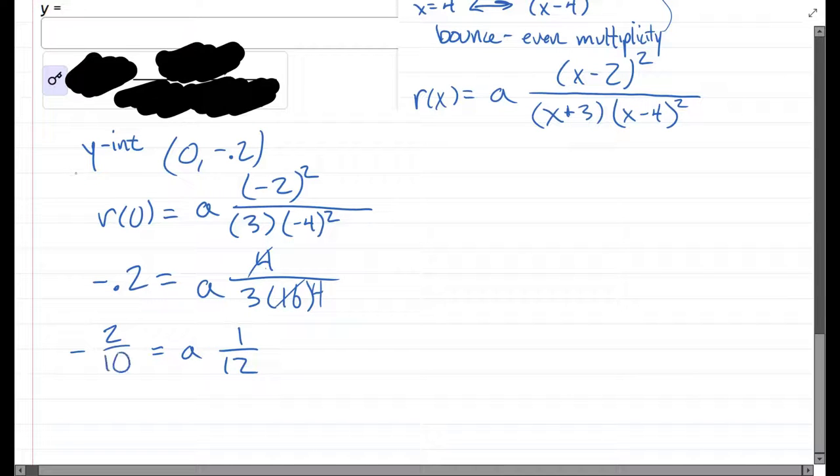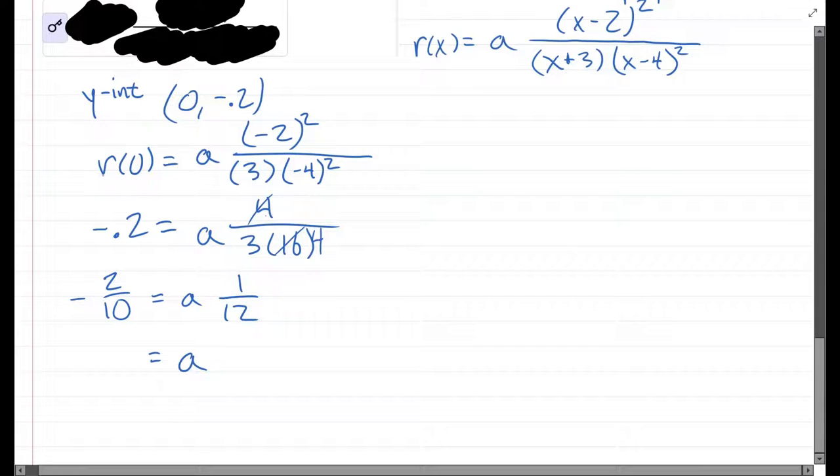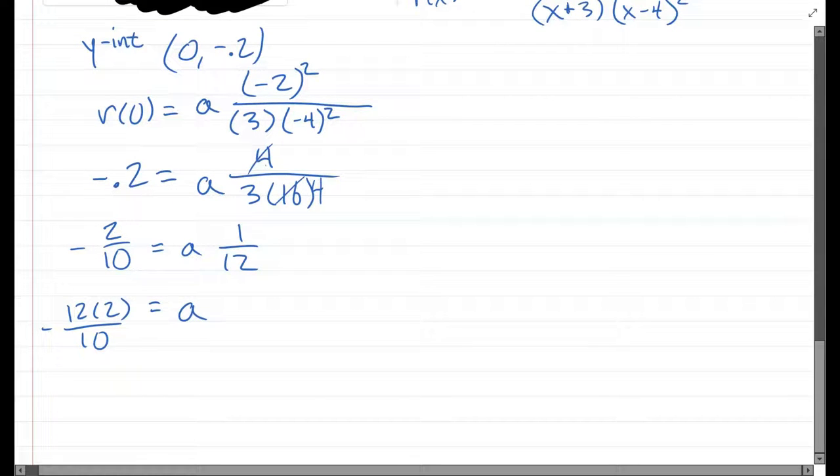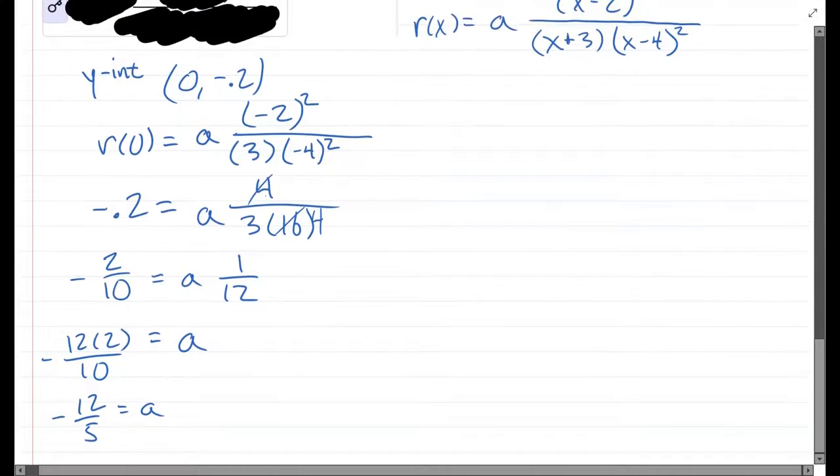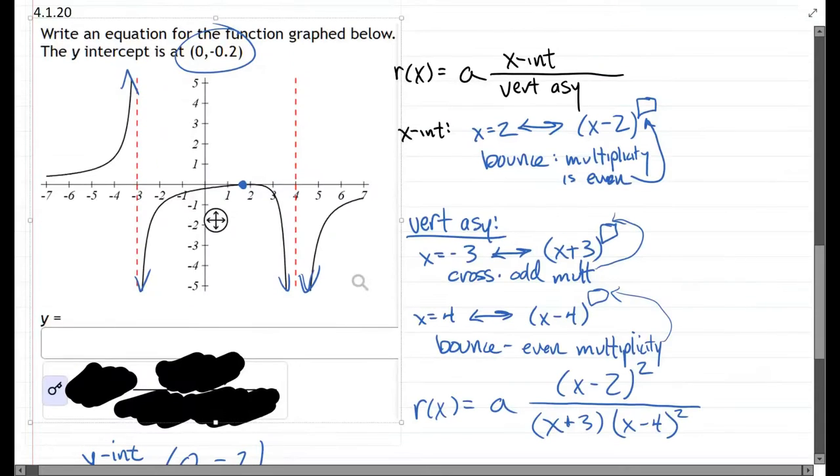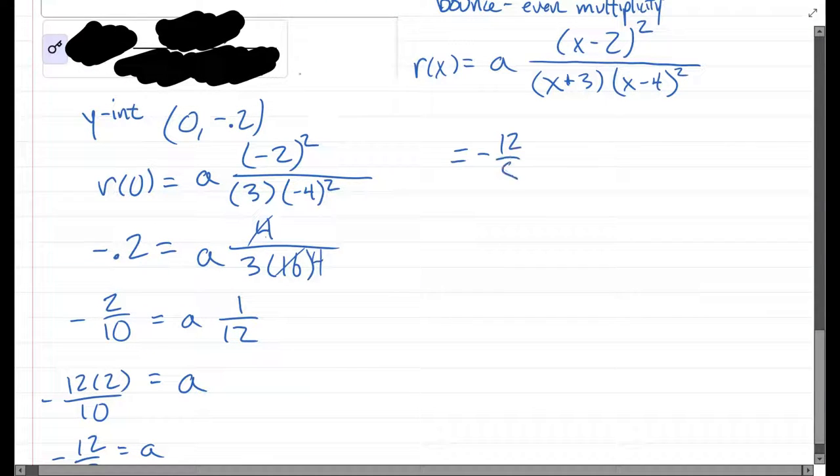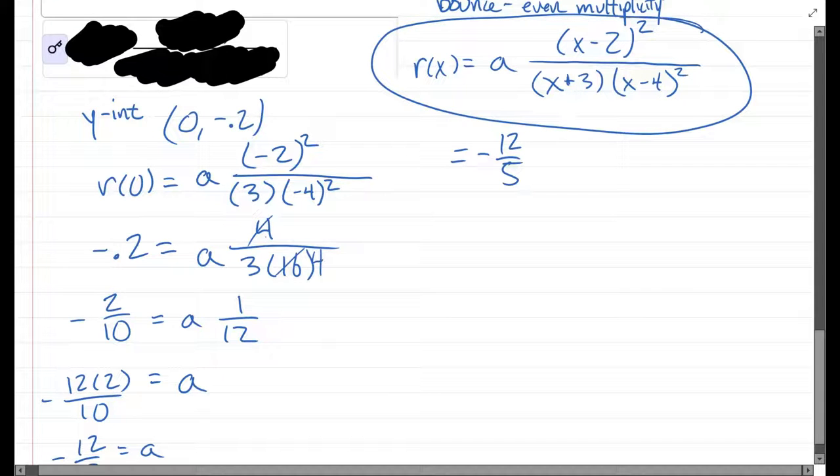And so a, multiply both sides by twelve. We have twelve times two over ten, negative. We can reduce this a little bit. Two cancels that, equals ten down to a five. So we have twelve fifths equals a. And we're just going to take that negative twelve fifths and rewrite this with the a value.